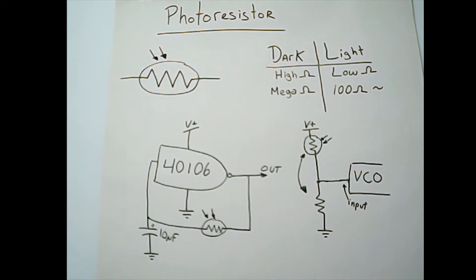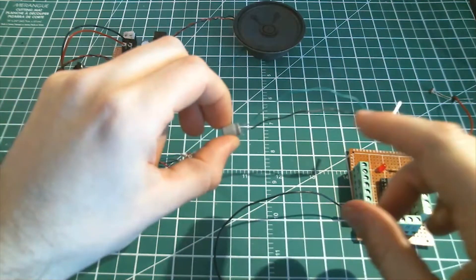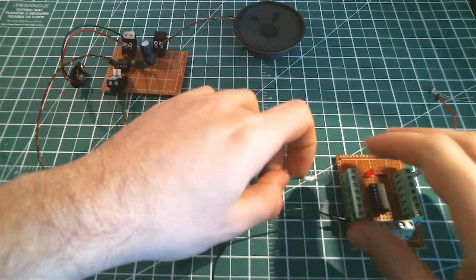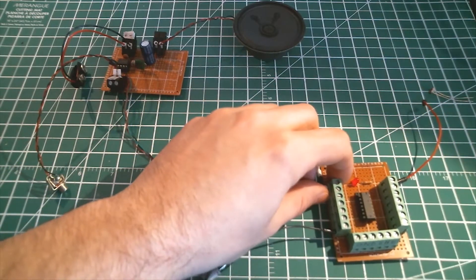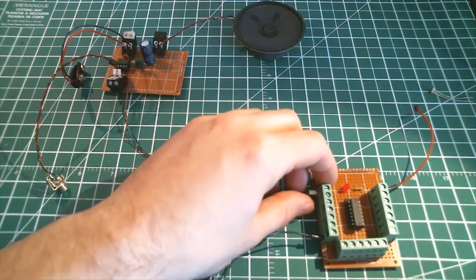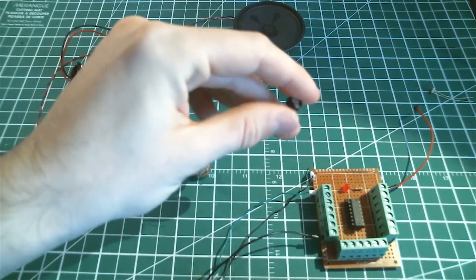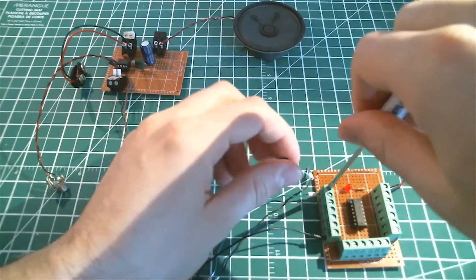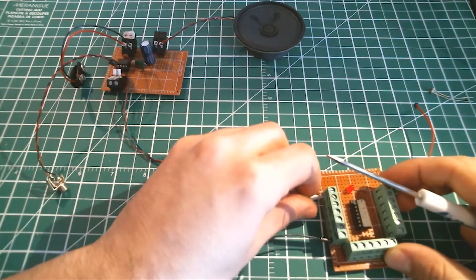So let's try it. Okay guys, so here we're just going to build the first project, actually with a 10 microfarad capacitor on the CD40106. And what we're going to do special is, instead of putting a 10k ohm potentiometer, just put your photoresistor between input and output.